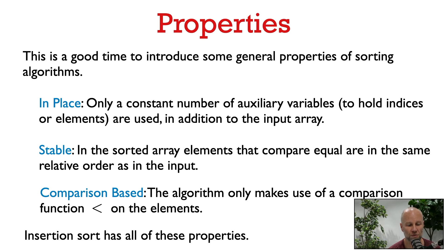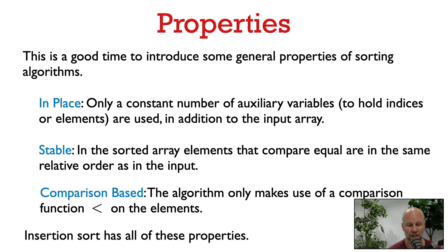A sorting algorithm is comparison-based if it only makes use of a comparison function on the elements, but not properties of the elements itself. For example, if you're sorting positive integers, an element could be used to refer to a position in an array. That would be making use of a property of the element itself, rather than just comparing elements to each other. So an algorithm which did that would not be comparison-based.